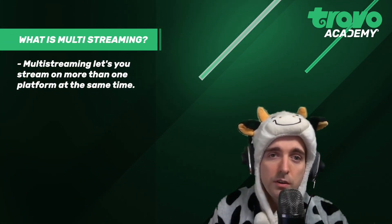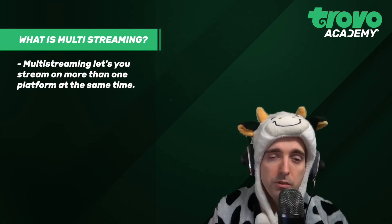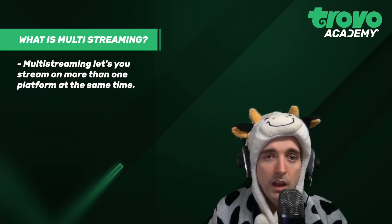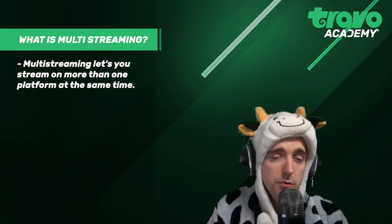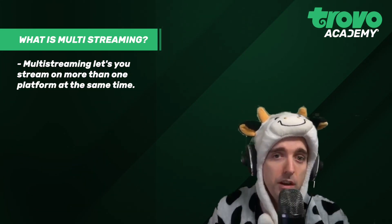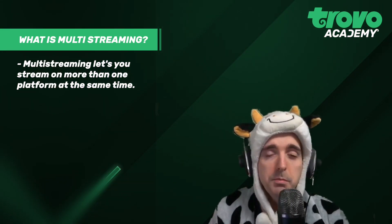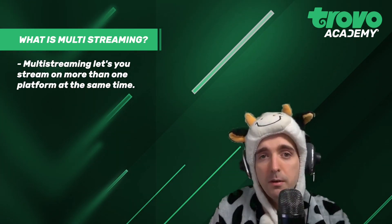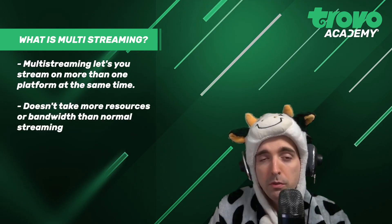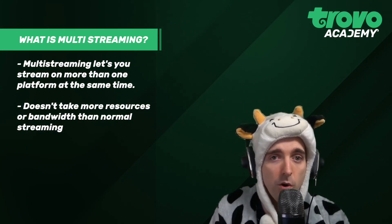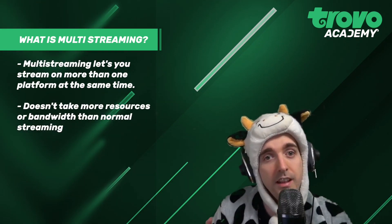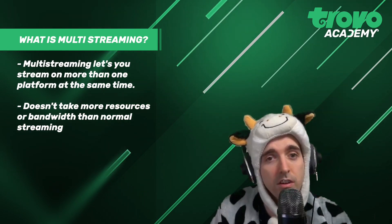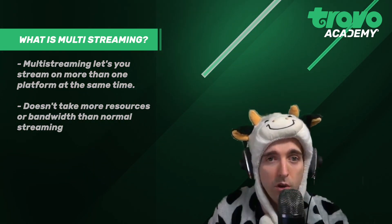Multistreaming is the act of using a service to stream to multiple platforms at the same time. This means that you can be live on Trovo, Twitch, and YouTube all at the same time. People seem to think it takes a lot of bandwidth to do this, when in fact it takes no more bandwidth than normal. You stream to a website, and then it splits it to the other platforms for you.